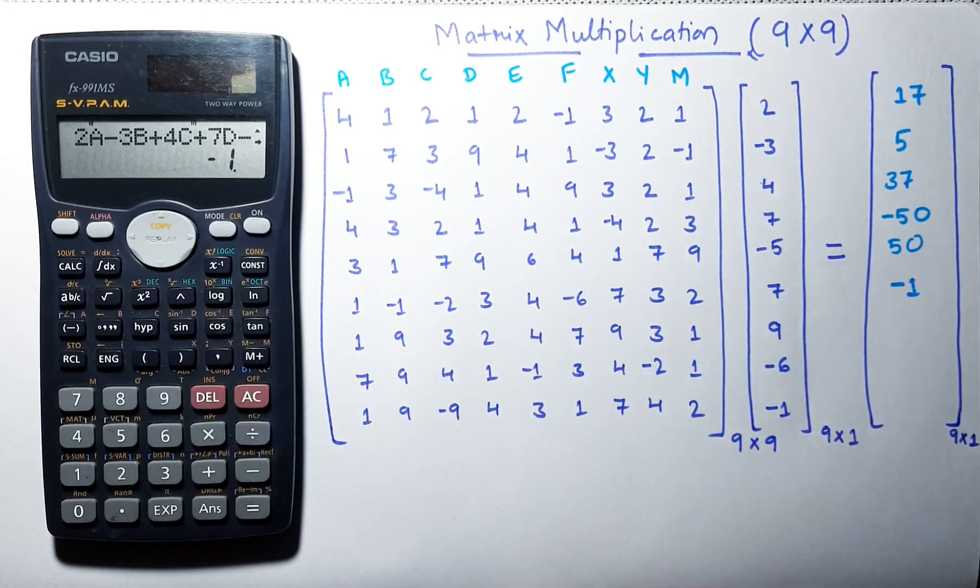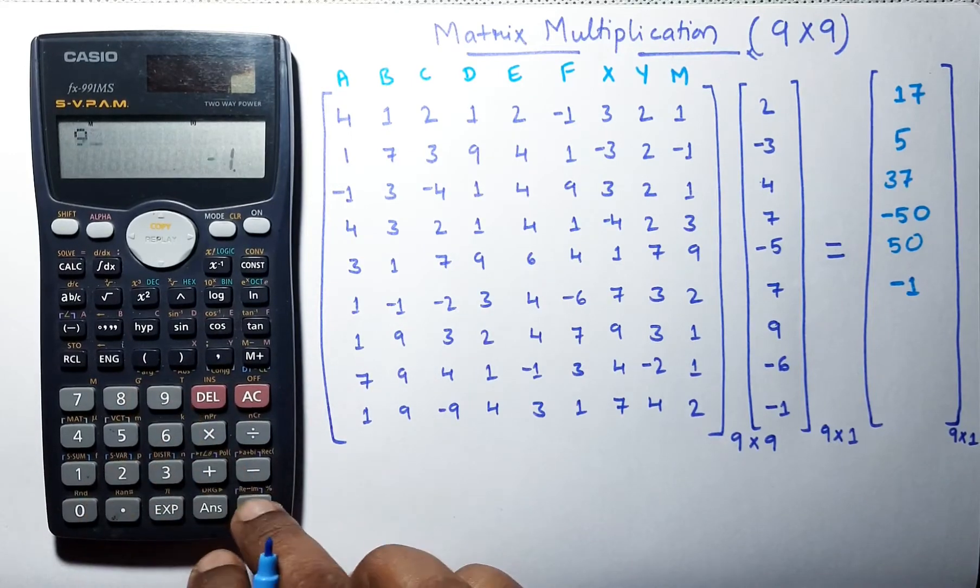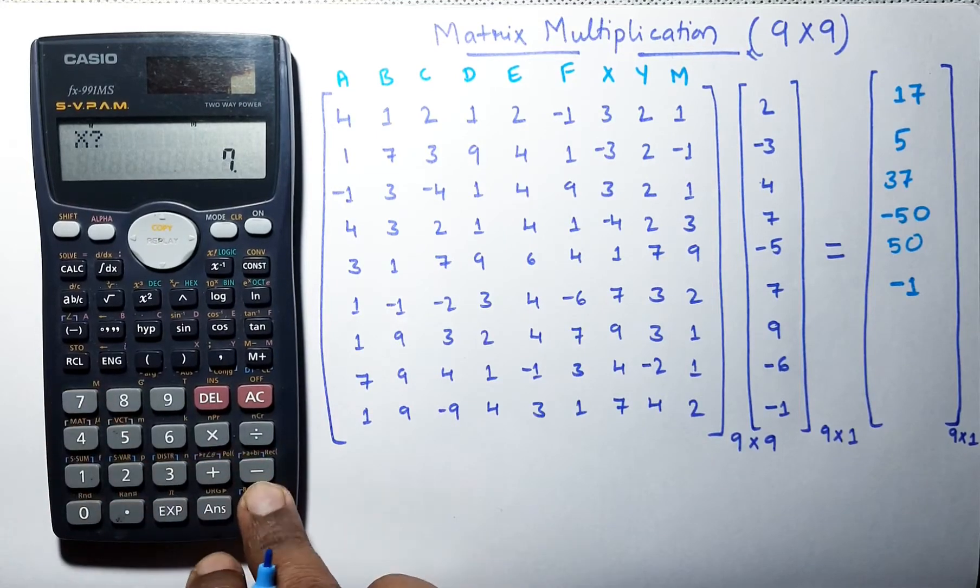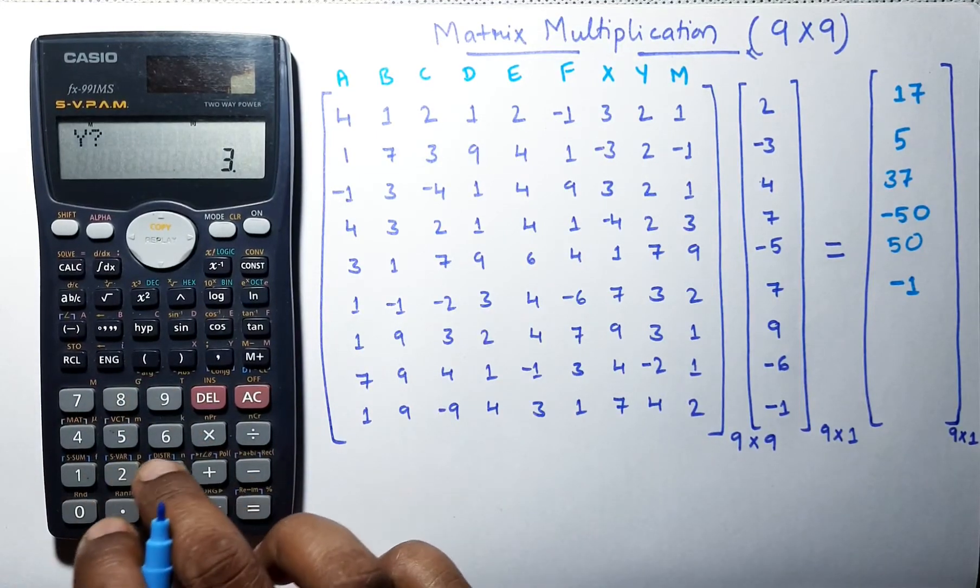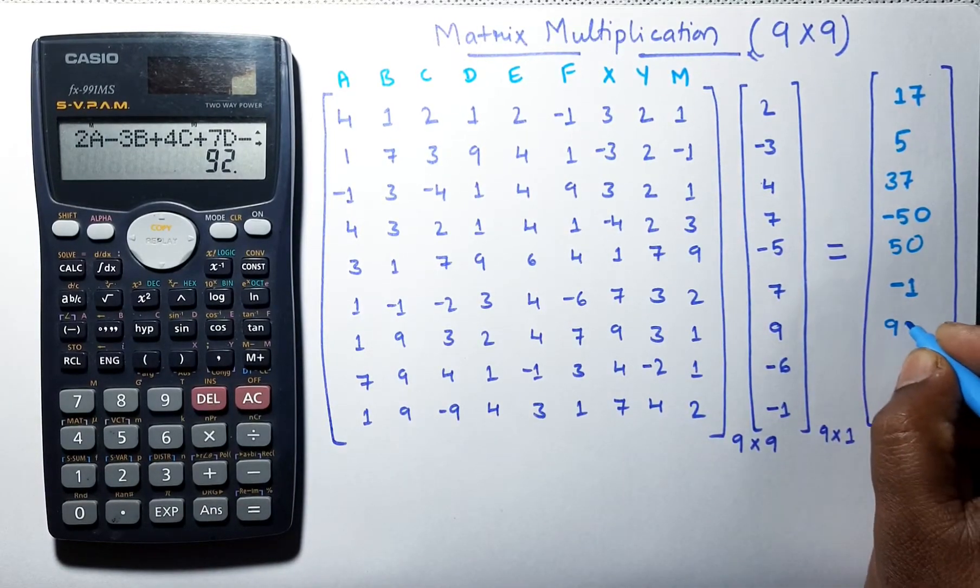Let us enter the next row, which is 1, 9, 3, 2, 4, 7, 9, 3, 1, and the answer is 92.